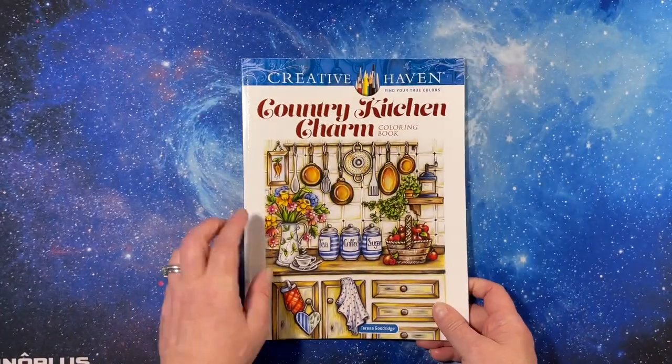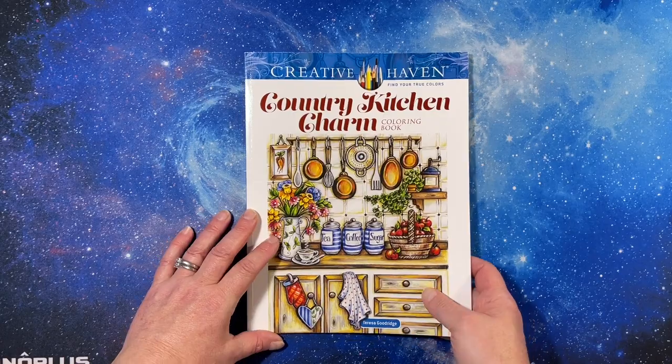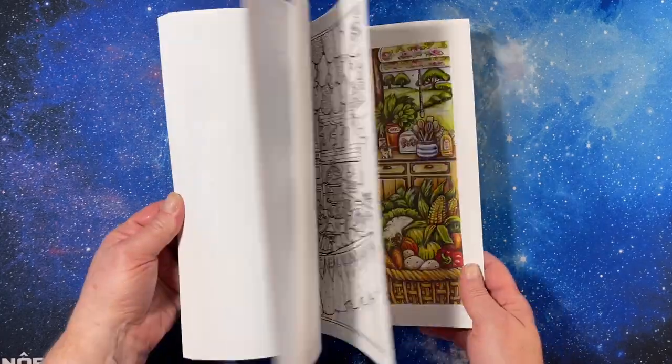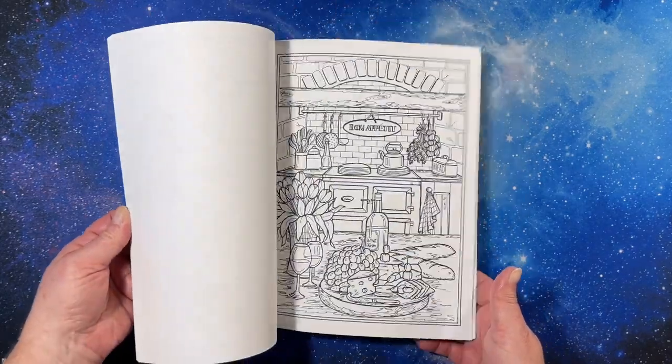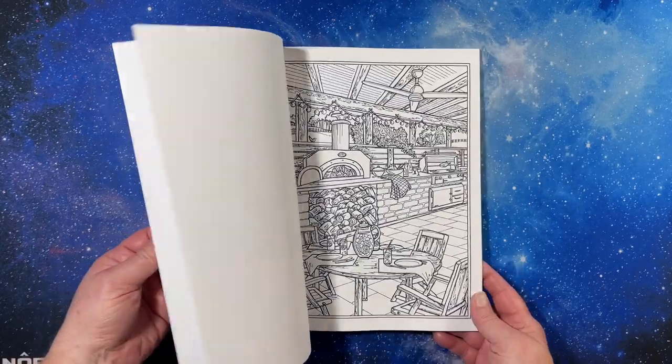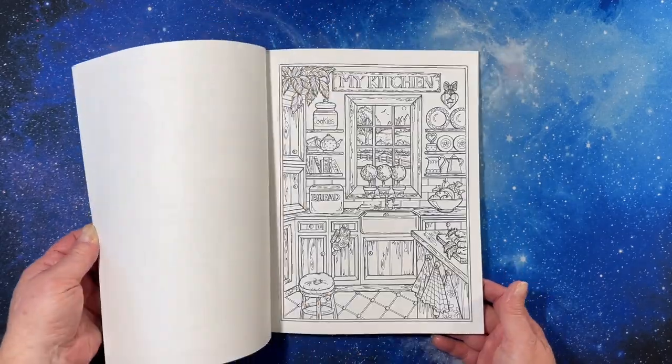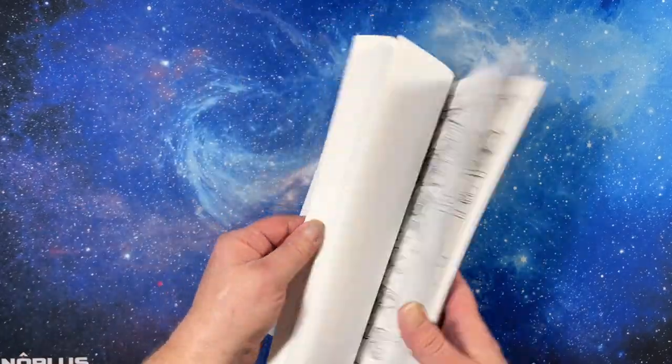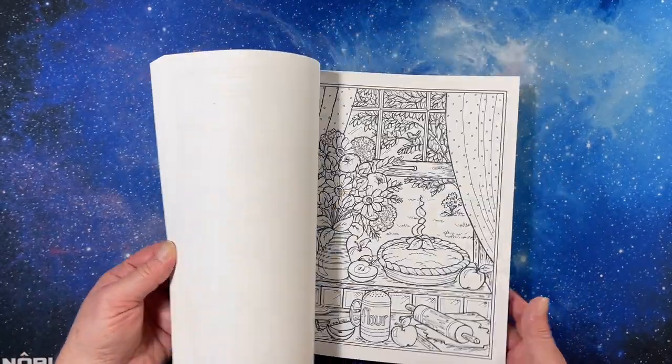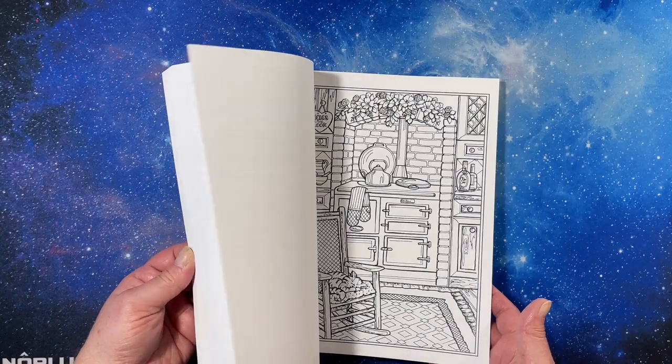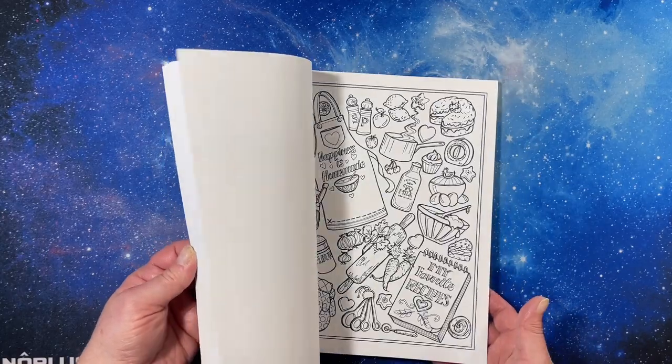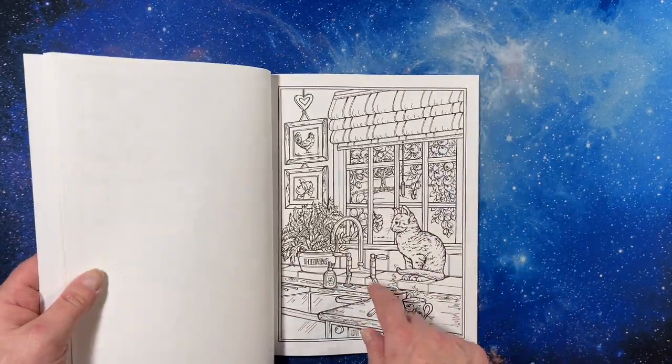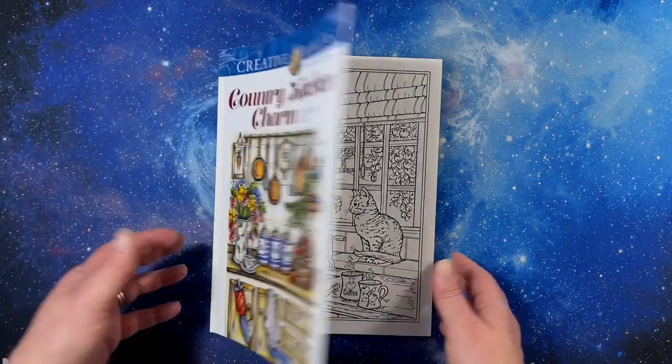I did get Country Kitchen Charm by Teresa Goodrich, a Creative Haven book. I didn't do a flip through of this. There are a number of them out there but if you want one let me know. Oh Liz, I think it's Liz at home, did a color along with this picture and it's really cool. I like it.